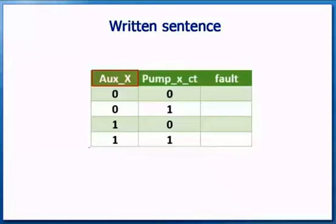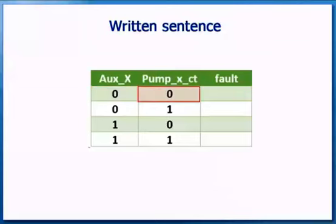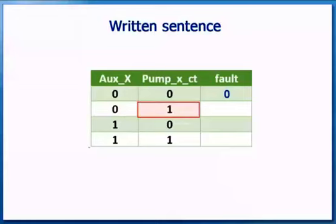There is AUXX to indicate when PUMPX is switched on, and PUMPXCT indicates that PUMPX is running correctly. We can use a truth table to show the possible combinations. If auxiliary X is off and PUMPXCT is off, then this isn't a fault — we show a 0. If auxiliary X is off and PUMPXCT is on, then this is a fault — we show a 1.